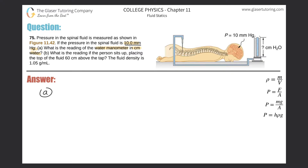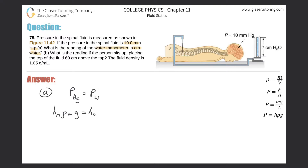They're telling us a height of 10 millimeters of mercury and we need to convert that into a height of water. I'm going to use this formula: the pressure given in terms of mercury equals the pressure given in terms of water. Expanding each side, the height of mercury times the density of mercury times gravity equals the height of water times the density of water times gravity. These gravity terms cancel out.